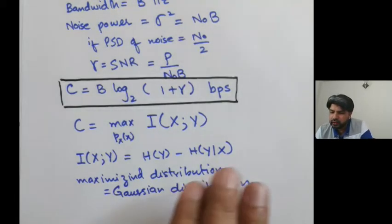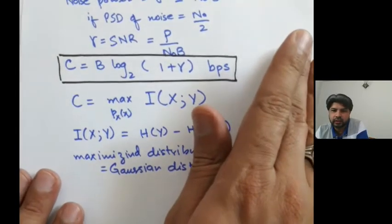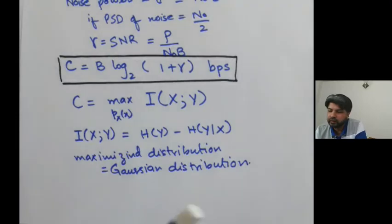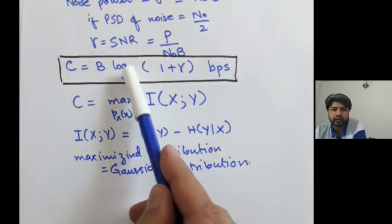So we proved last time that using these information theoretical concepts, we can derive this formula for Shannon capacity.